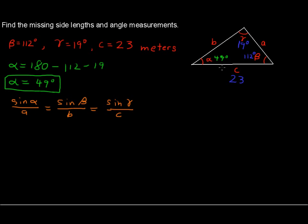The point is, the sine of an angle divided by its opposite side length equals the sine of another angle divided by its opposite side length. So, that's the way the law of sines works.